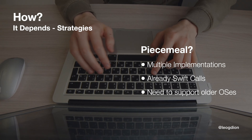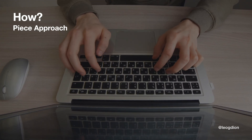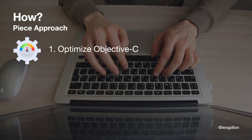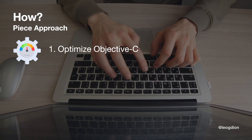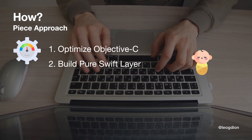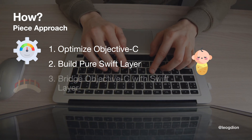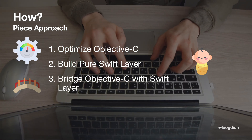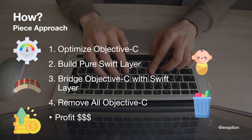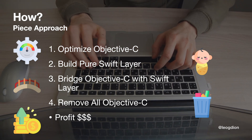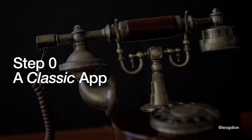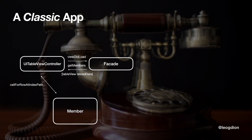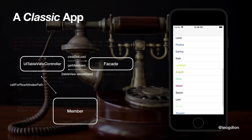Let's talk more about this piecemeal approach, which is what we're going to focus on today. We'll start by talking about how to optimize your Objective-C code so it's more compatible with your new Swift code. Next, we'll talk about building a pure Swift layer that doesn't rely on any Objective-C. Then we'll bridge that pure Swift code so it's still available in any Objective-C APIs remaining in your codebase. Lastly, we'll talk about removing all the old Objective-C code once you've done that. Think of your classic Objective-C app with a view controller and a database that pulls up members.